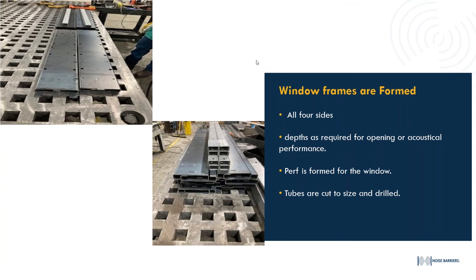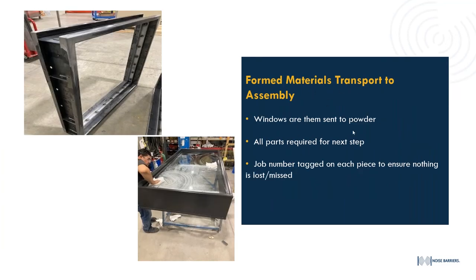At this stage the perforated material is also formed to ensure a proper fit when the window is manufactured, avoiding the need to remanufacture the perf during glass installation. Tubes are cut to size and drilled simultaneously — these hold the glass stop frames. Material is then transported for assembly. All parts required for each window go to our powder coating line with a job number tagged on each piece to ensure nothing is lost or missing.